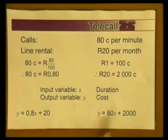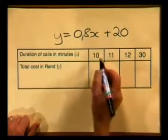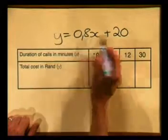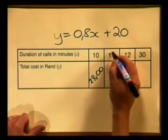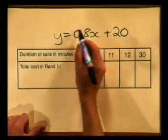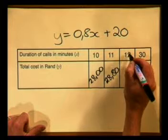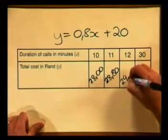Using the formula in rands, y = 0,8x + 20, we can calculate the total cost per month for any duration of calls. For 10 minutes: 10 × 0,8 = 8, plus 20 = 28 rand. For 11 minutes: 11 × 0,8 = 8,8, plus 20 = 28,80 rand. For 12 minutes: 12 × 0,8 = 9,6, plus 20 = 29,60 rand.